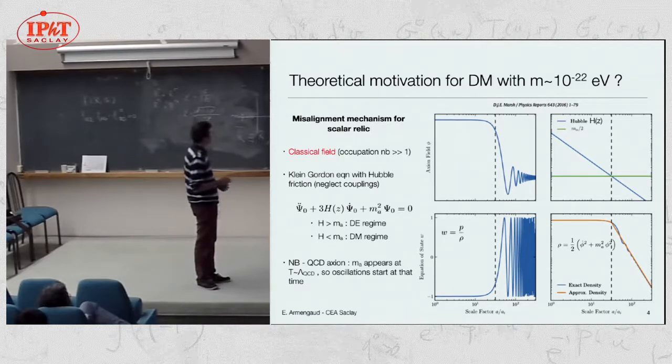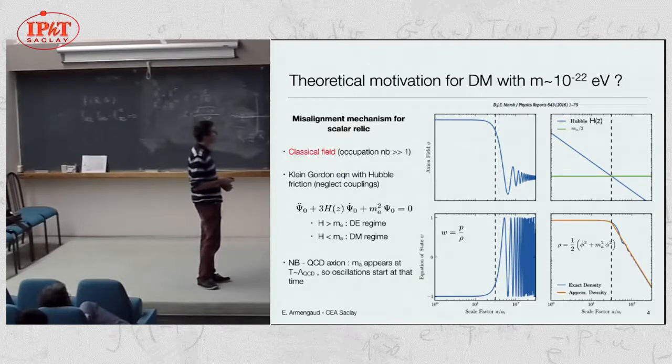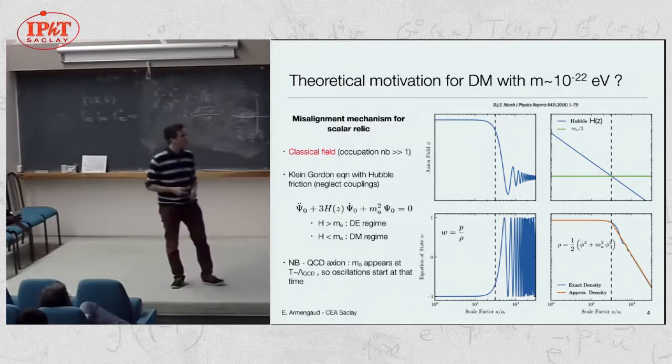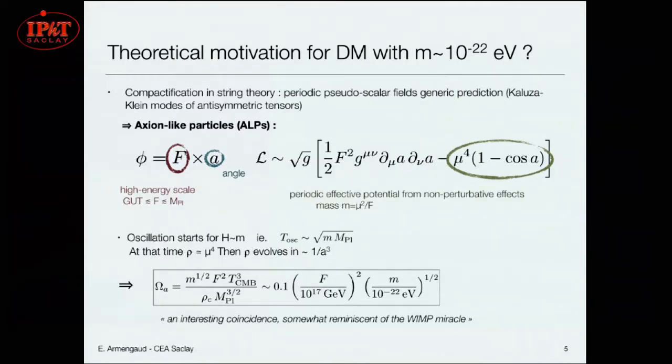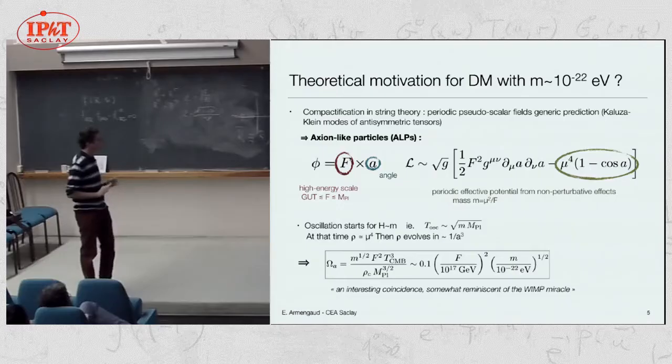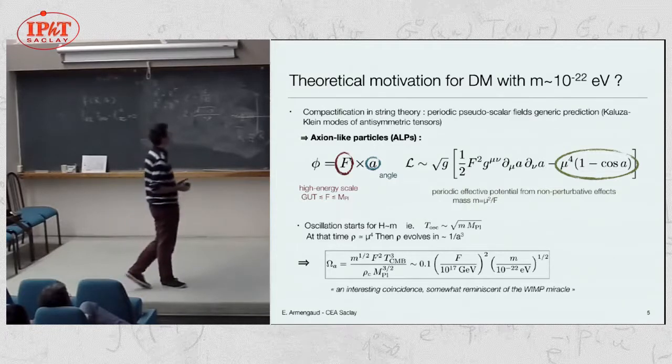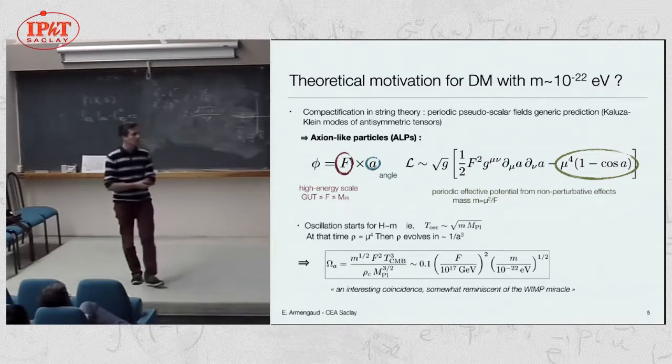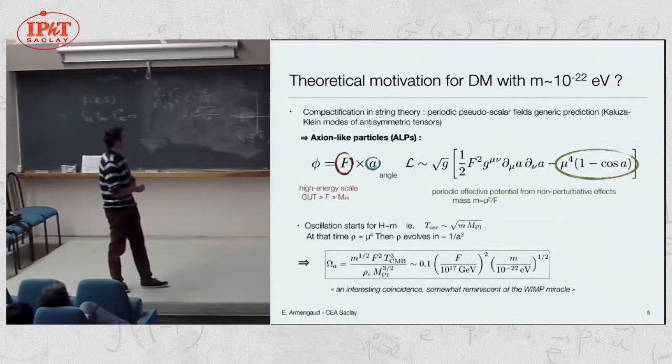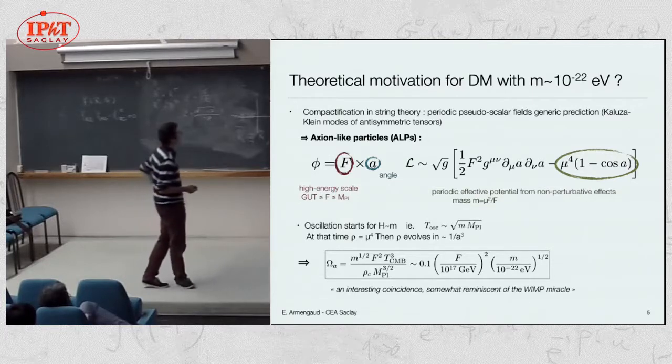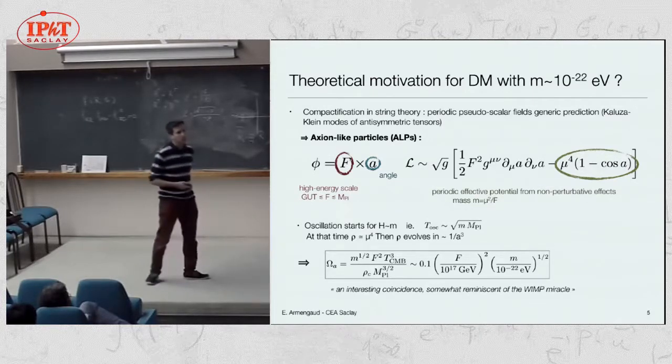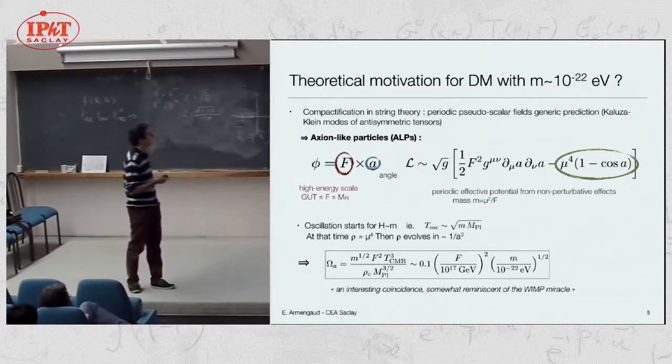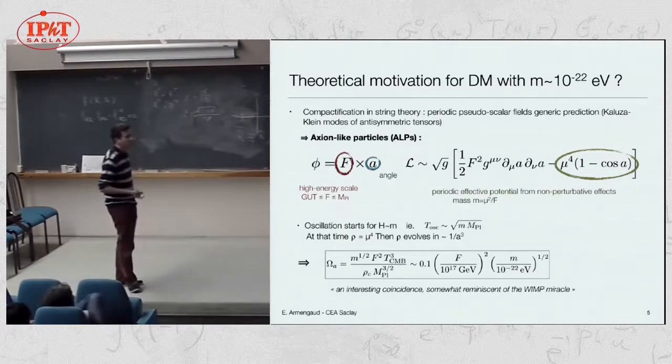That's the misalignment mechanism, which if you have an initial value for the dark matter density, you can know what is the density now. The question is, why 10 to the minus 22? Is it plausible or not? There is an argument which is not extremely strong, but which is there to motivate this value of the mass, a theoretical argument.